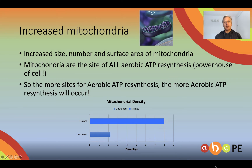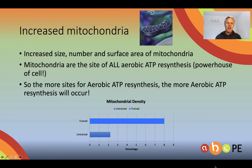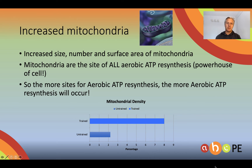Specifically, oxygen moving from the bloodstream into the muscle and carbon dioxide moving out. Increased mitochondria is a real key here. Mitochondria increasing in size, number and surface area means that we've got more sites for aerobic ATP production. Mitochondria are the site of all aerobic ATP resynthesis.